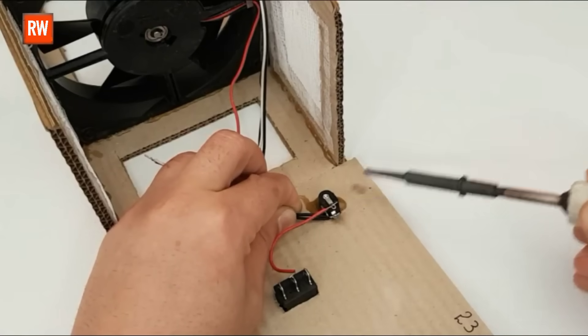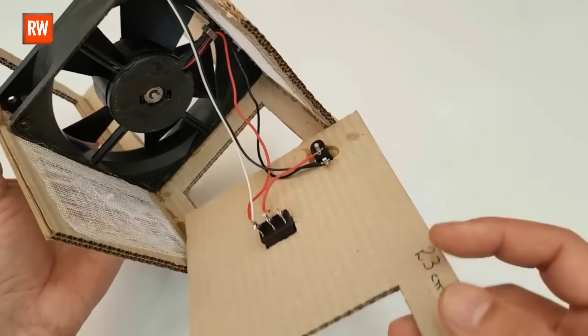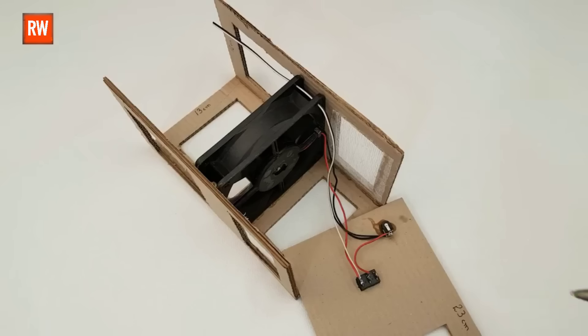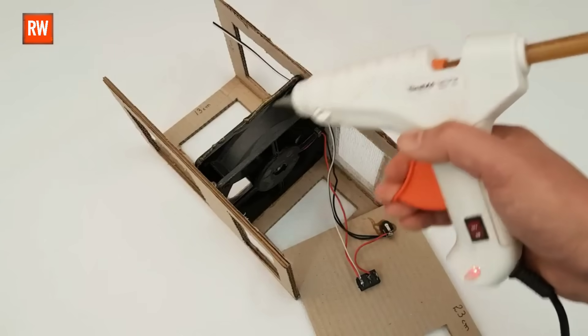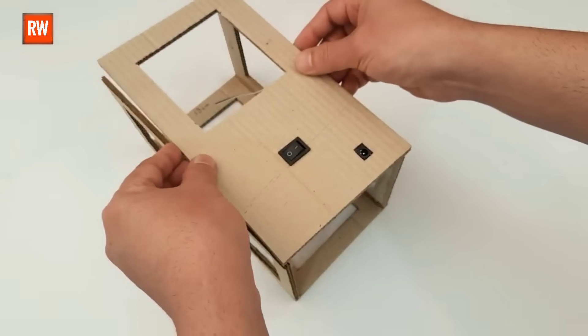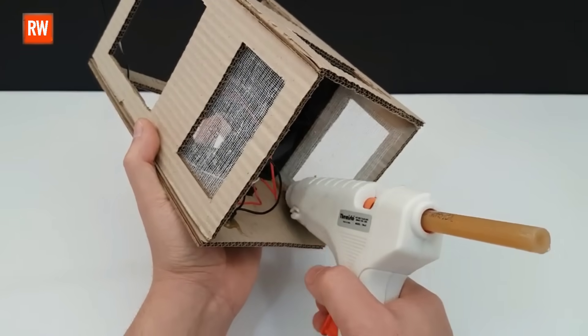Now it's time to move on to the wiring, where we'll connect everything to the 12V DC fan. Once the connections are properly made and secured, we'll proceed to attach the cardboard panel. To do this, we'll use a hot glue gun to firmly fix the cardboard in place, making sure it aligns correctly and provides strong support for the overall structure. This step not only secures the build, but also gives it a clean and finished look.